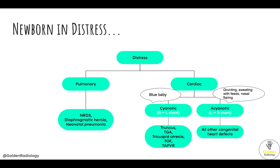As I mentioned in a previous video, the newborn in distress vignette can be challenging because there is just so much that can be wrong with the baby. An easy way to organize one's thoughts is to split the possible etiologies into cardiac and pulmonary. In a previous video, we went over the pulmonary etiologies, and today we'll review the cardiac ones.